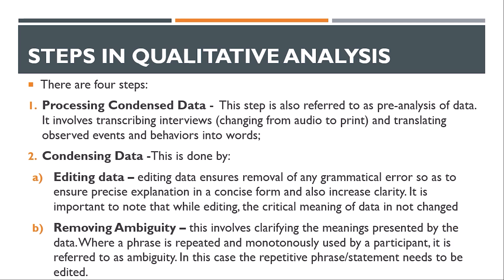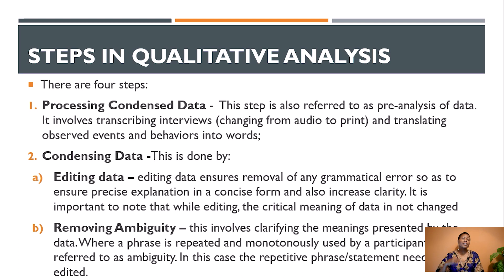The second part of condensing is removing ambiguity, which involves clarifying the meanings presented by the data. For instance, if your respondents keep repeating a phrase during an interview — such as saying 'ah' before every response — that becomes monotonous. Initially it may have signaled something, but if it keeps recurring it becomes ambiguity that needs to be removed. Please do not change the meaning of the data when doing this.